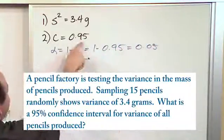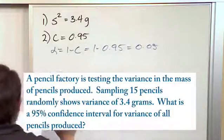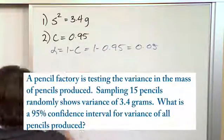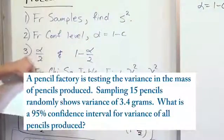So you see when C is big, alpha is always small because they always have to add to 1. All right? So 0.05, that's alpha. Now, we go back over here and we say step 3. We have to...